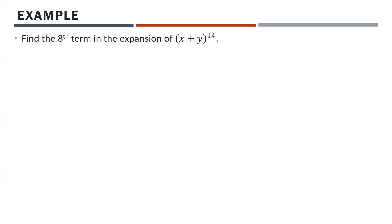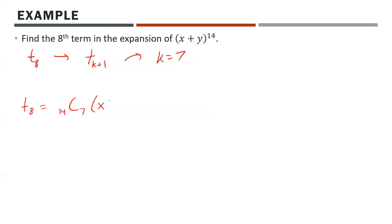Find the 8th term in the expansion of (x + y)^14. T8 means we're looking for Tk+1 where k+1=8, so k=7. Therefore T8 = 14C7 · x^(14−7) · y^7 = 14C7 · x^7 · y^7. Putting 14C7 into the calculator gives 3,432. So T8 = 3,432 x^7 y^7. That's the general term — just one of the terms in the expansion.